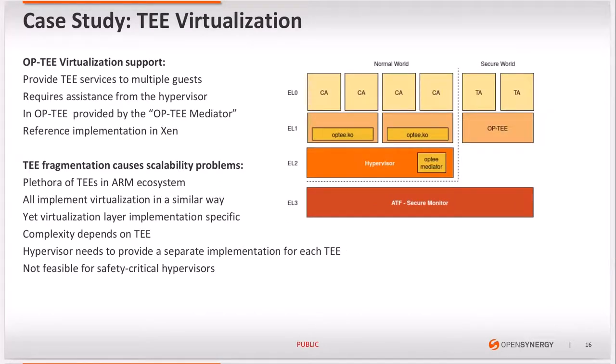TEEs are becoming ubiquitous in various types of devices, and so is the requirement for virtualization support. Most OP-TEEs now start providing this feature. Virtualization support normally requires some assistance from the hypervisor, and in OP-TEE that involves appending each request with a VM ID and performing memory translations, security checks, context maintenance, and so on.